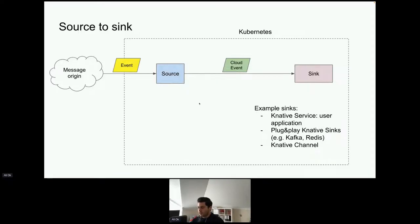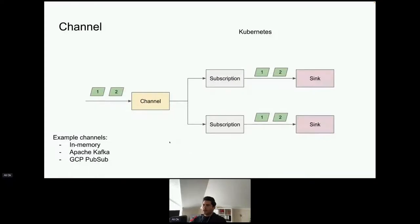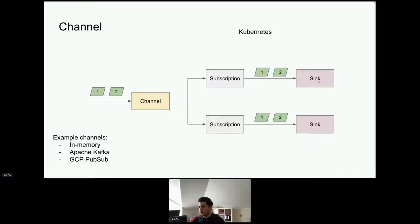A Channel is another primitive in Knative Eventing. Its most important aspect is supporting fan-out and providing decoupling. You can have a source send events to a channel, and the channel then sends those events to all its subscribers. The subscribers — sinks — can be anything: random user applications, Knative serving applications, etc.